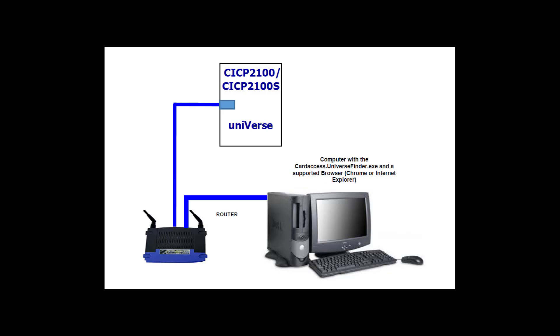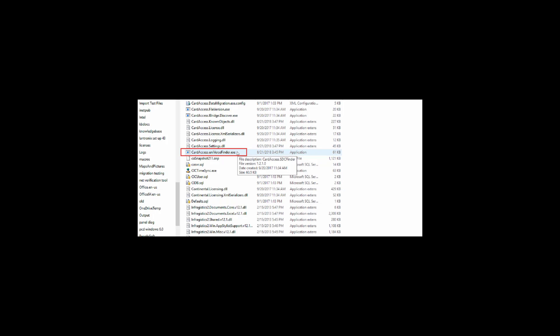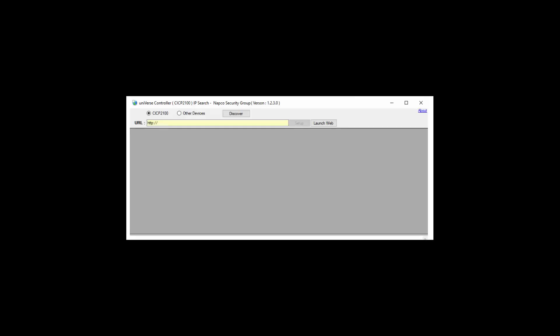Configure the computer, router, and Universe unit as per the drawing. Next, launch the Universe Finder utility version 1.2.3.x or later. If there is not a shortcut on the desktop, open File Explorer and launch the CardAccess.UniverseFinder from the CardAccess 4K Tools folder. The Universe Finder utility should then display.